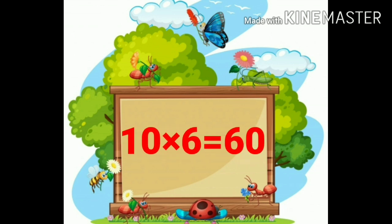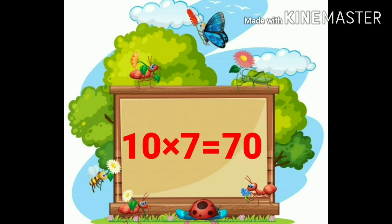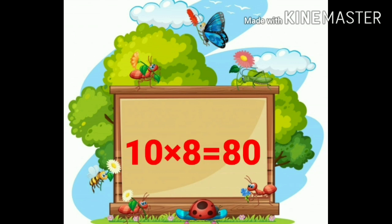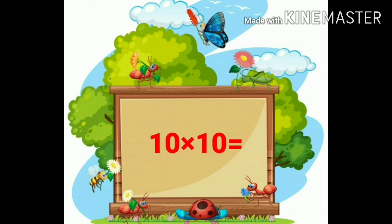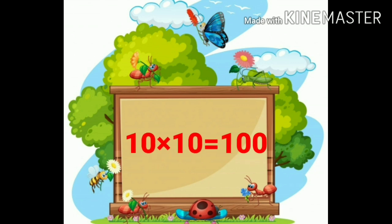Ten fives are fifty. Ten sixes are sixty. Ten sevens are seventy. Ten eights are eighty. Ten nines are ninety. Ten tens are hundred. Again we learn multiplication table of ten.